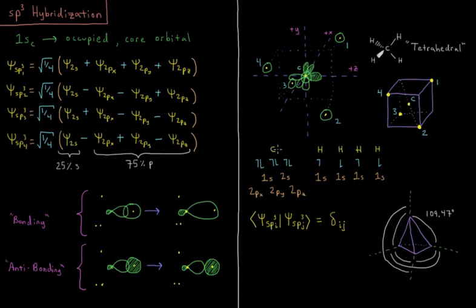We have a carbon which has six electrons. Two of those are in the 1s core orbital, occupied core orbital, and four of them are going to be in the valence shell constituting the 2s, 2pz, 2py, and 2px orbitals.